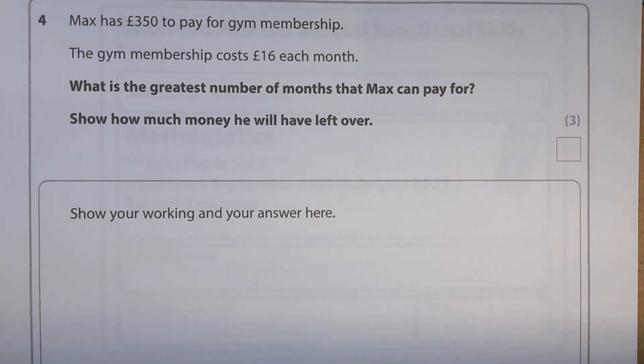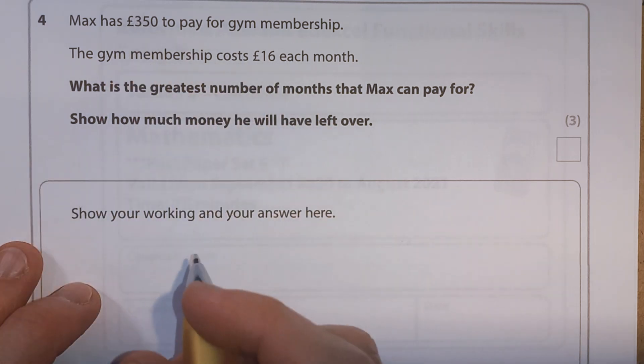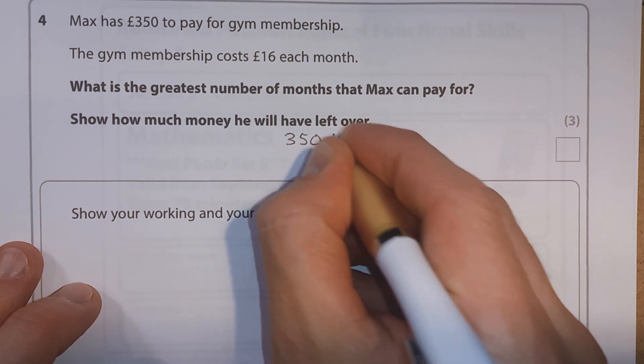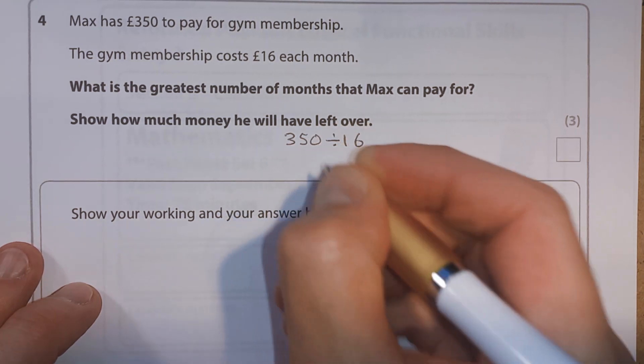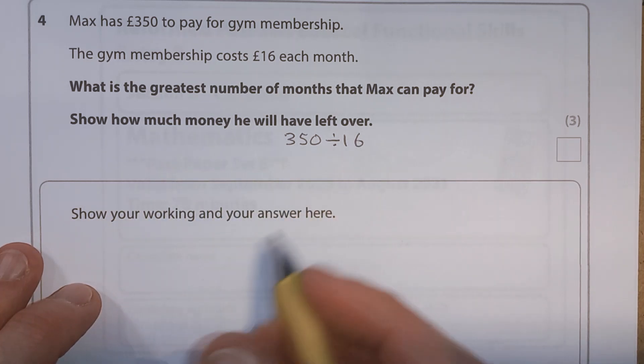And question 4. Max has £350 to pay for gym membership. The gym membership costs £16 each month. What is the greatest number of months that Max can pay for? Show how much money he will have left over. So we want to know how many 16 pounds go into 350. Or in other words, 350 divided by 16. But we know there's going to be some left as well because they say show how much money will you have left over.